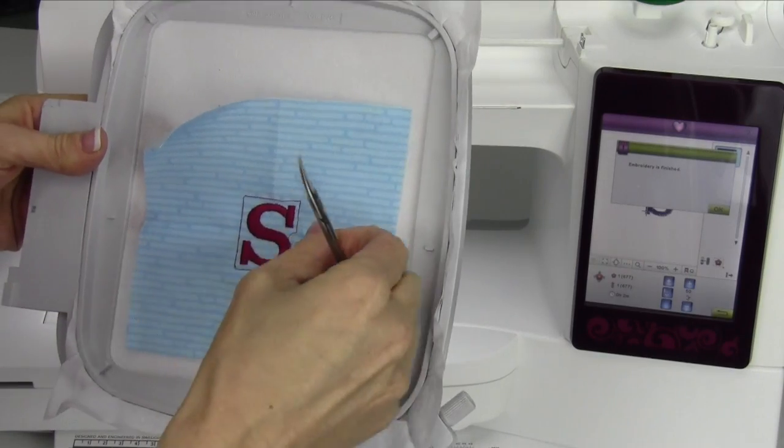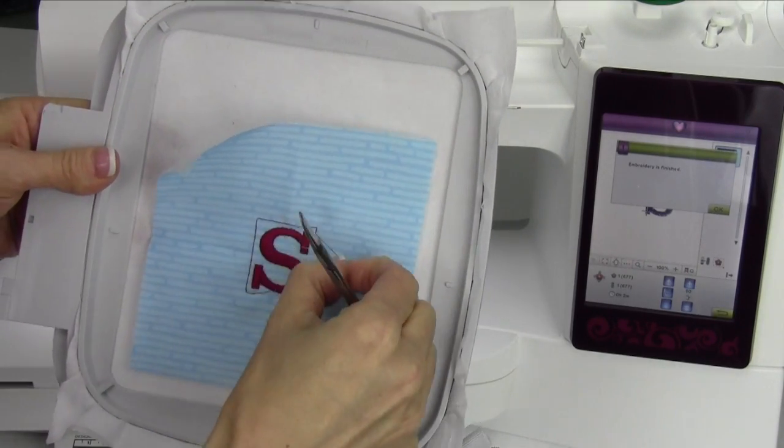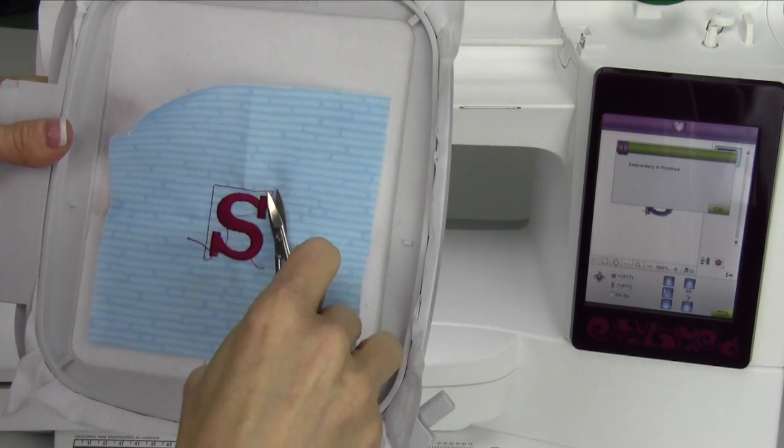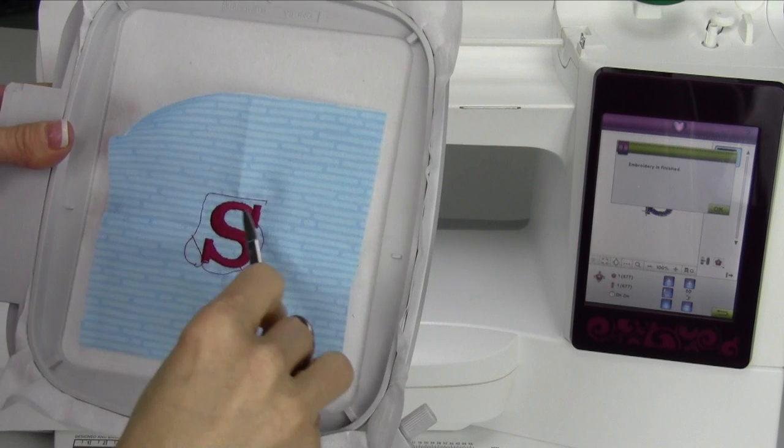This will actually just remove all the threads from the top side. Just keep on doing that. That is basting in the hoop. Thank you.